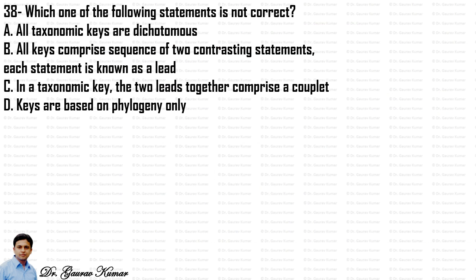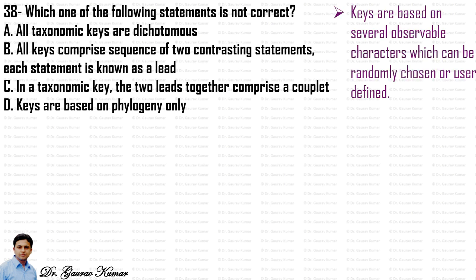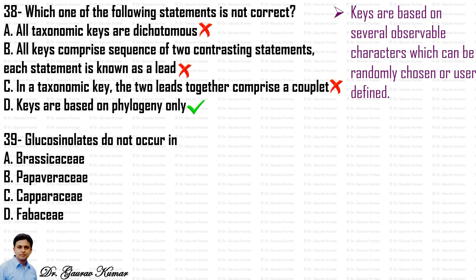Next question: which statement is not true about taxonomic keys? Options: all taxonomic keys are dichotomous; all keys comprise sequences of two contrasting statements called leads; two leads together comprise a couplet; and keys are based on phylogeny only. Options A, B, and C are correct. Option D is wrong because keys are based on several observable characters that can be randomly chosen or user-defined, not phylogeny only.